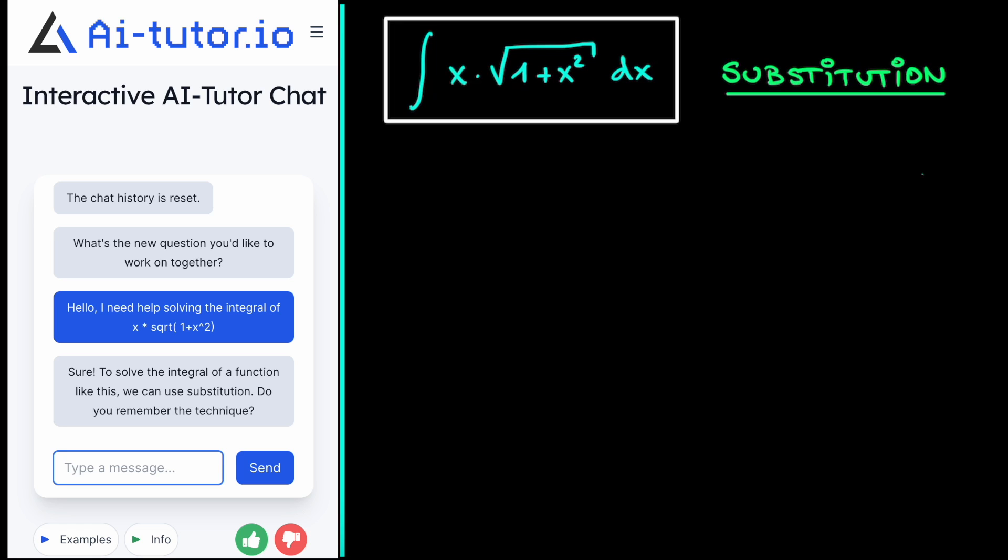Now, of course, the majority of the work still needs to be done. In particular, for substitution, what we need to do is find the appropriate substitution variable. So a new variable, let's say u, written as a function of the old variable x. So let's look at our integral.